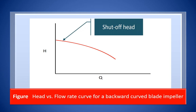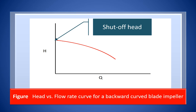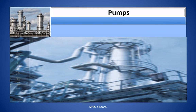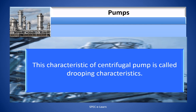Illustrated in this figure is the head versus flow characteristics of the centrifugal pump. Note that the head is maximum when the flow is zero. As the flow is increased, the head drops. This is a graphical representation of the mathematical expression for the head rise we discussed earlier. This characteristic of a centrifugal pump is called drooping characteristics.